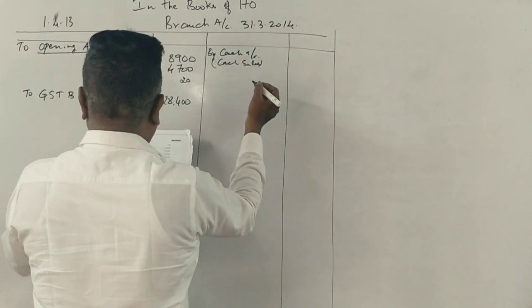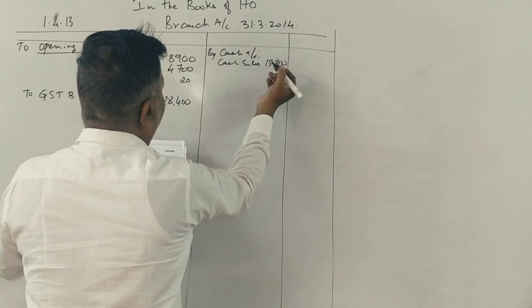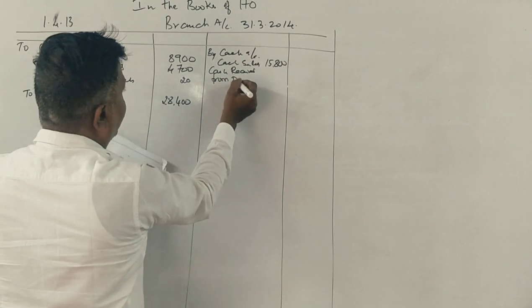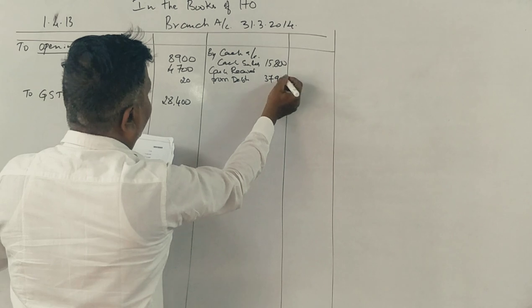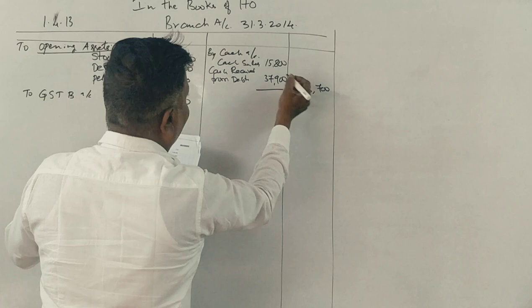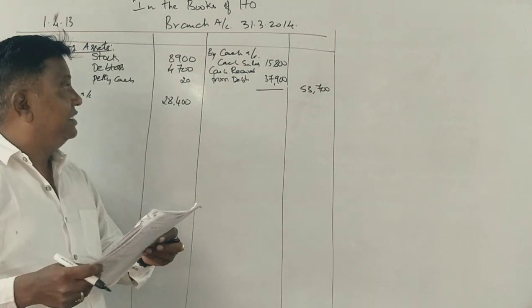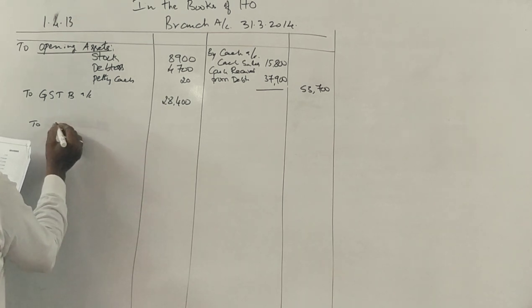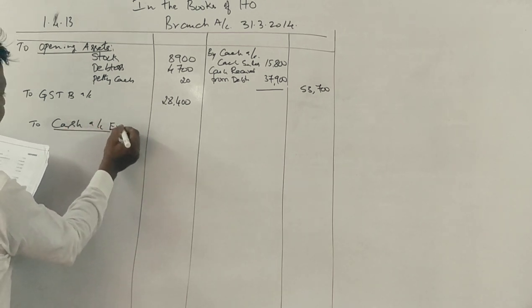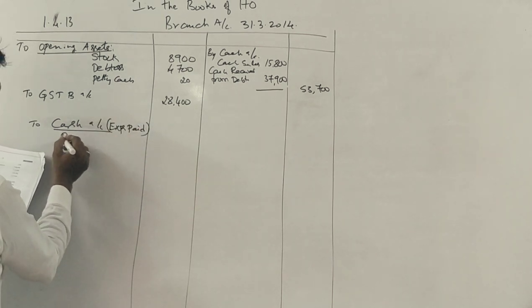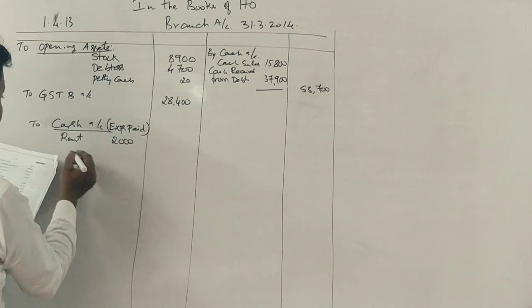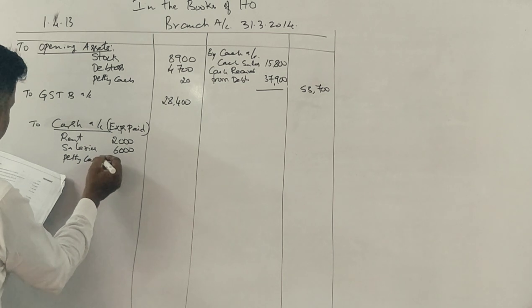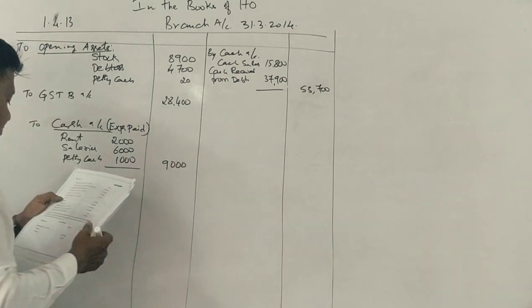Collections from cash received from debtors, how is it? 37,900. Now credit sales, you have a debit for branch account. Next, cash sent to branch for expenses, to cash account, expenses paid by branch. Rent is 2,000, salaries is 6,000, petty cash is 1,000. Total is 9,000.